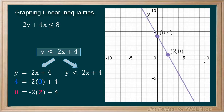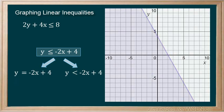Through these two points, we place a solid line indicating that all points on the line are part of the solution. And we shade below the line as our inequality is less than or equal to.